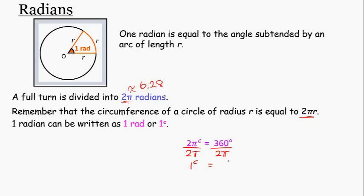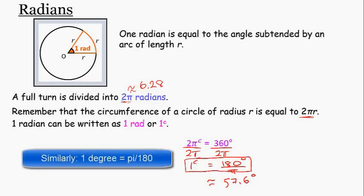So one radian is going to be equal to 180 degrees over π, which is approximately 57.6 degrees. But in order to eliminate any rounding, we would normally write it like this: one radian is equal to 180 degrees over π.